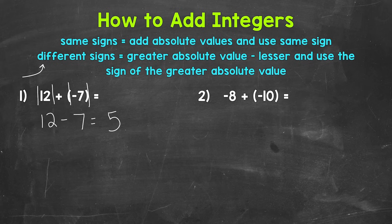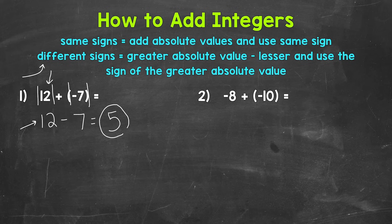Now we need to determine if our answer is going to be positive or negative. We need to take a look at the larger absolute value, which is 12. We take the sign of the larger absolute value from the original problem. That 12 is positive, so our final answer is positive 5. Basically, we worked with absolute values, found the difference, and the answer takes the sign of the greater absolute value from the original problem.